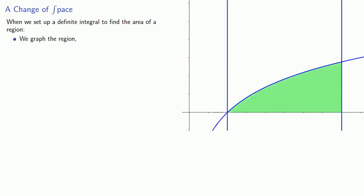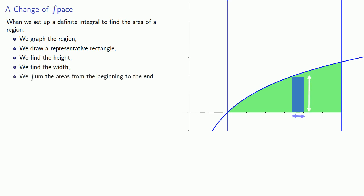So let's think about this. When we set up a definite integral to find the area of a region, we look around to see if there are any bands of rogue mathematicians we have to impress. And since there aren't, we graph the region, we draw a representative rectangle, we find the height and width, and then we sum the areas of these representative rectangles from the beginning to the end of the region.